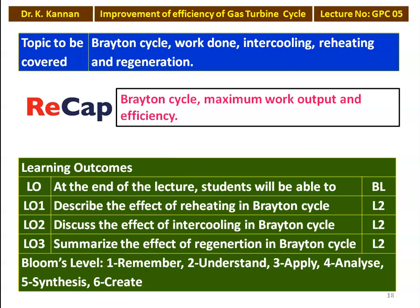The learning outcomes for this lecture: at the end of the lecture, students will be able to describe the effect of reheating in the Brayton cycle, discuss the effect of intercooling in the Brayton cycle, and summarize the effect of regeneration in the Brayton cycle. All these things are coming under Bloom's level 2; by understanding the lecture, the student will achieve these 3 outcomes.